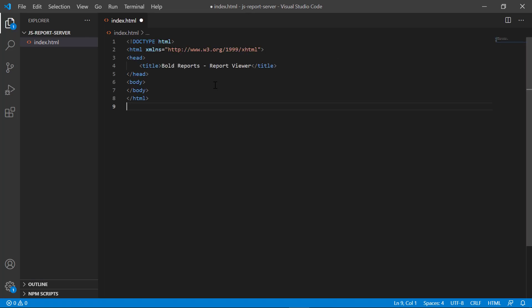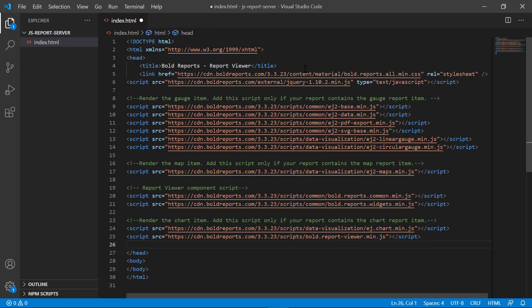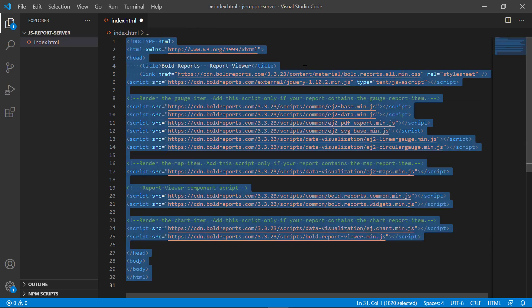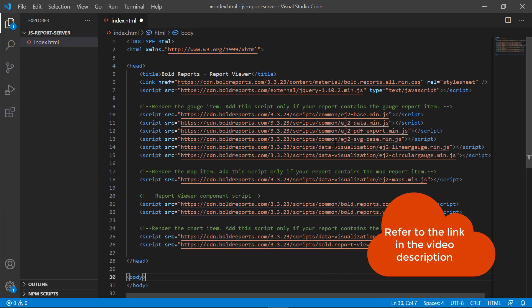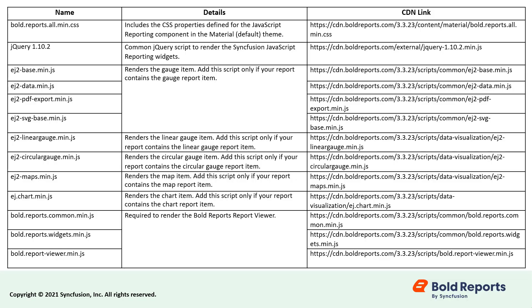Type the code. Let's see how to reference the scripts and stylesheets in the HTML file. Reference the necessary scripts and stylesheets in the head tag and format the document. I have provided the documentation link in the video description for your convenience. The purpose of each script and stylesheet is explained in the following table. Bold.reports.all.min.css includes the CSS properties for the JavaScript reporting component. The jQuery 1.10.2 script is used to render the Syncfusion JavaScript reporting widgets. EJ2Base.min.js, EJ2Data.min.js, EJ2PDFExport.min.js, and EJ2SVGBase.min.js are used to render the gauge item.